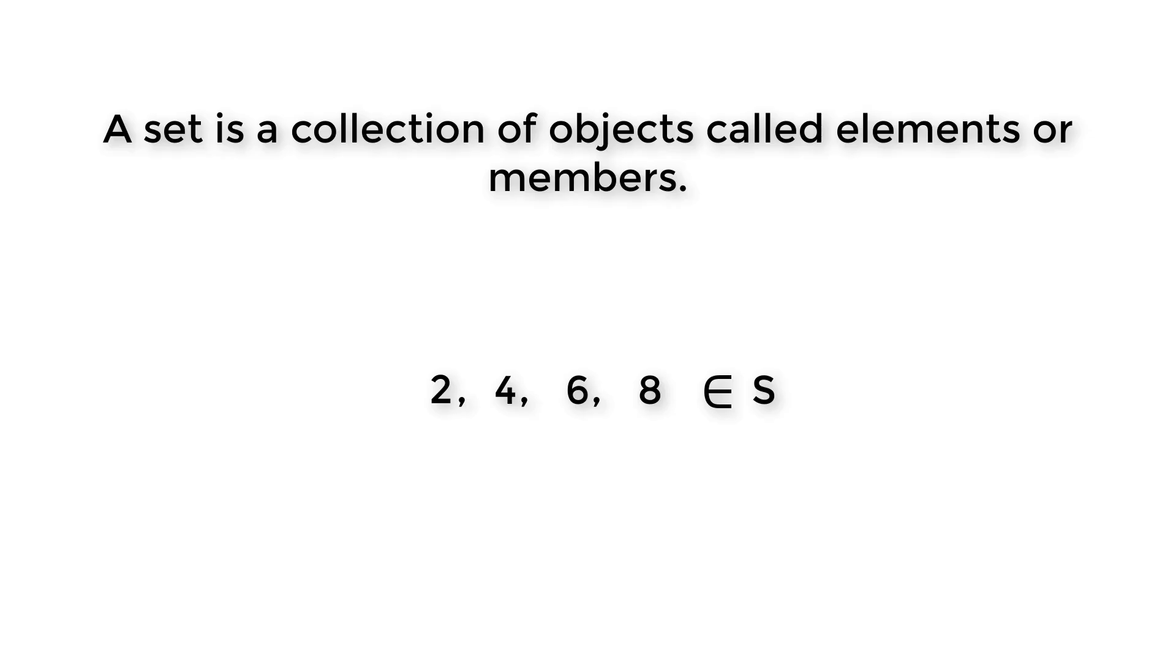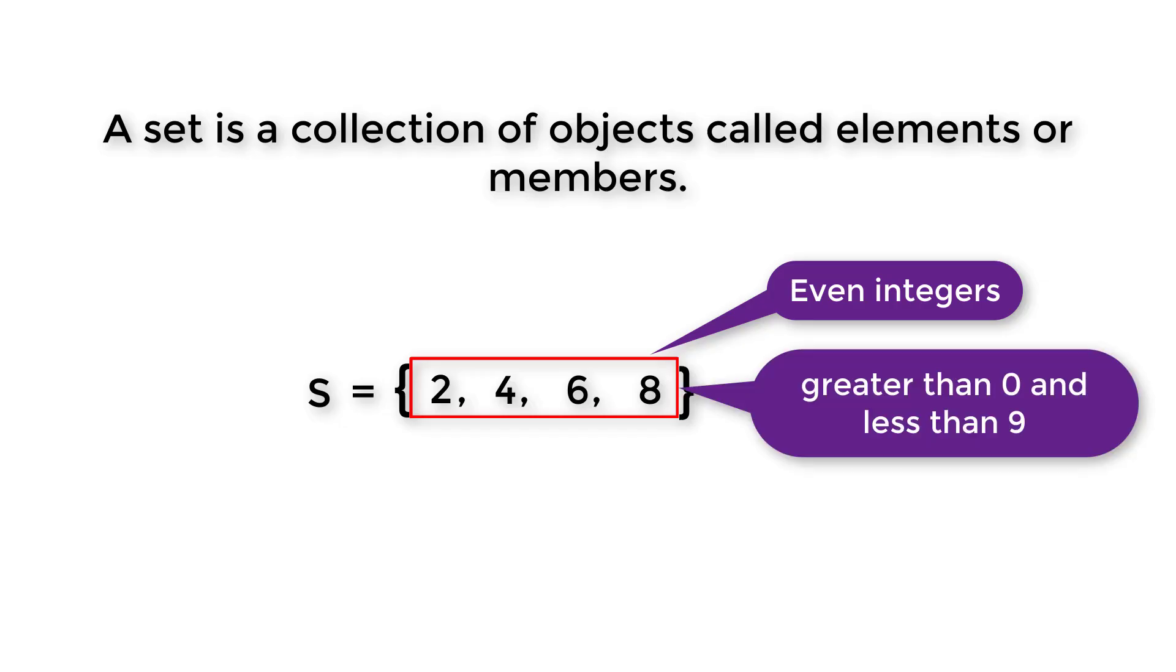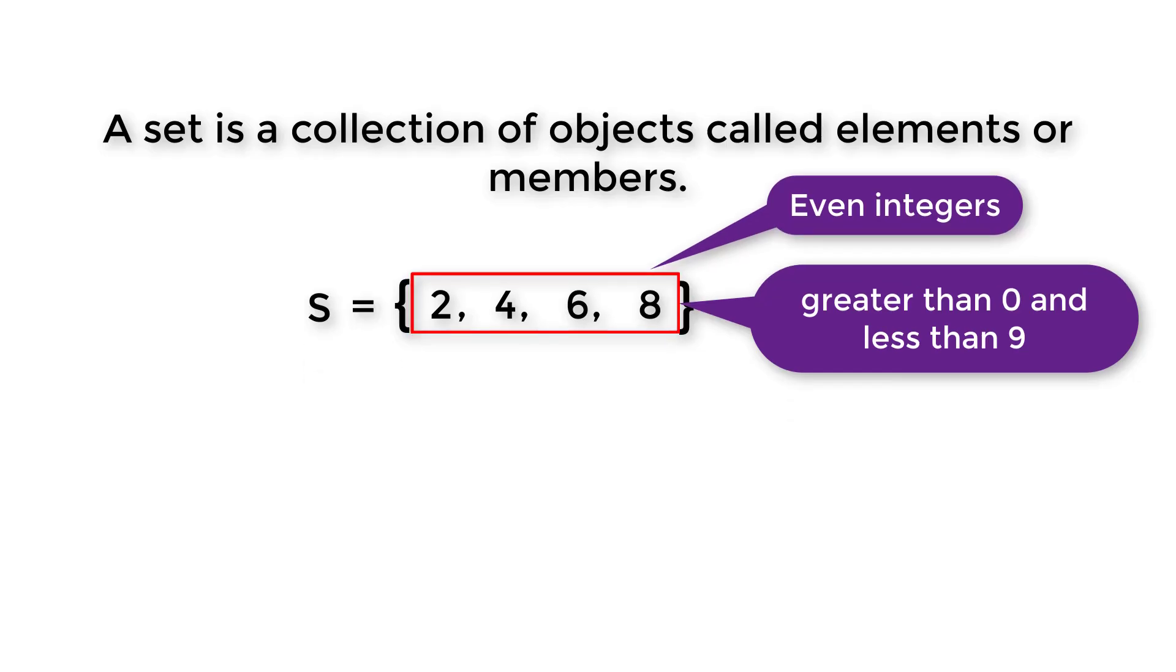A set can be expressed in two ways. We can separate the elements inside of a set of curly brackets by commas, or we can use the properties of the elements which characterize them. Here, 2, 4, 6, 8 are even integers and they are greater than zero and less than nine.